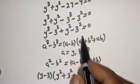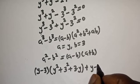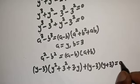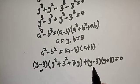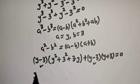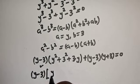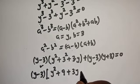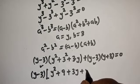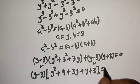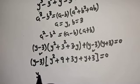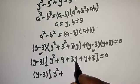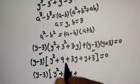Substituting, we get (y minus 3)(y squared plus 3y plus 9) plus (y minus 3)(y plus 3) equals 0. The factor (y minus 3) is common, so we factor it out: (y minus 3) times (y squared plus 3y plus 9 plus y plus 3) equals 0, which simplifies to (y minus 3)(y squared plus 4y plus 12) equals 0.